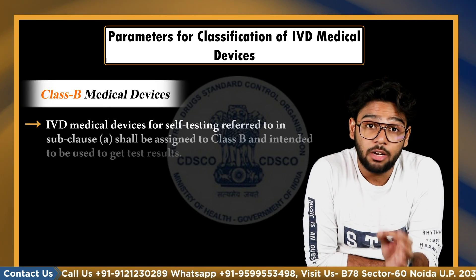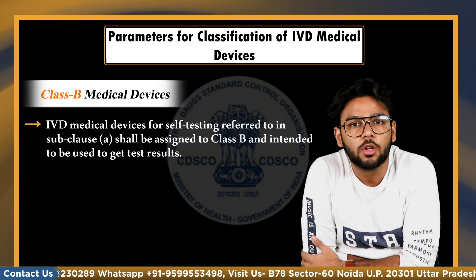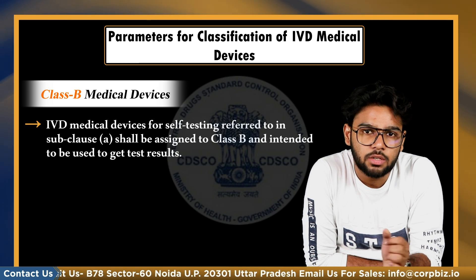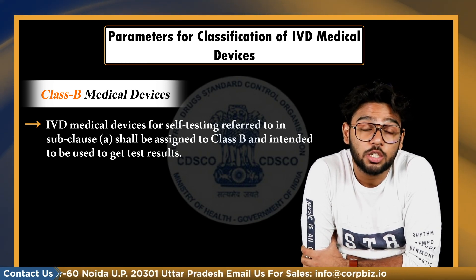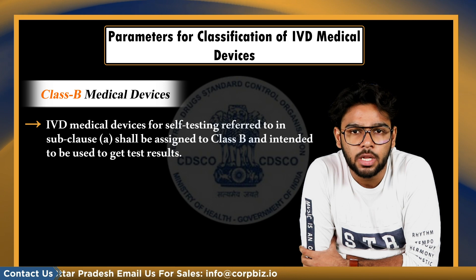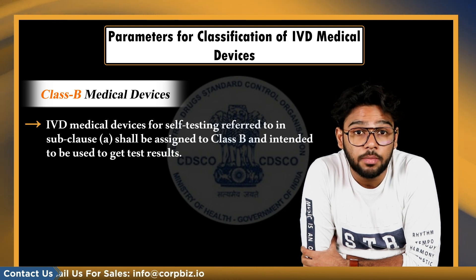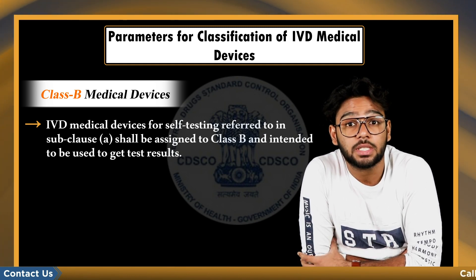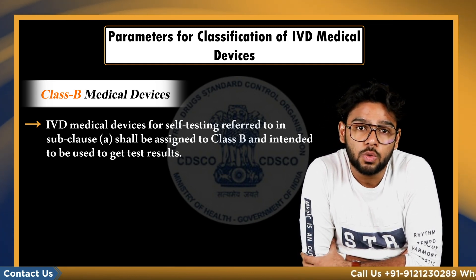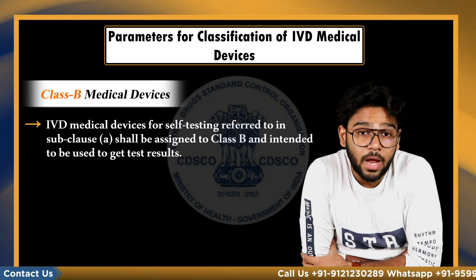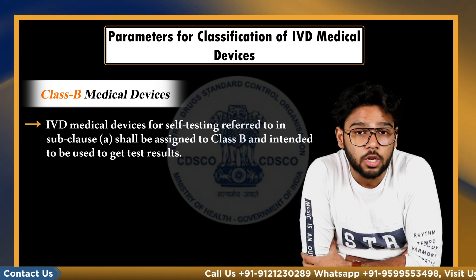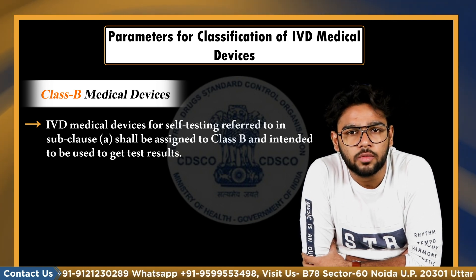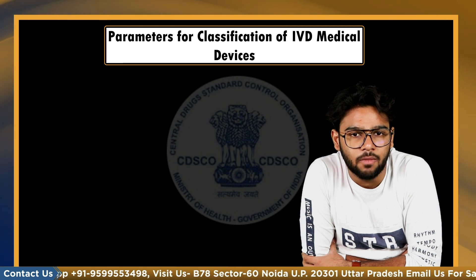Next is Class B. IVD medical devices for self-testing shall be assigned to Class B and intended to be used to get test results which are not for the determination of medically critical status, and preliminary test results that need confirmation through the appropriate laboratory test. Other IVD medical devices shall be assigned to Class B in case Clauses 2i and 2v don't apply, or a substance or product used for the analysis of the performance of an analytical process or part thereof without a qualitative or quantitative assigned value.